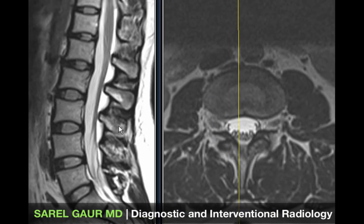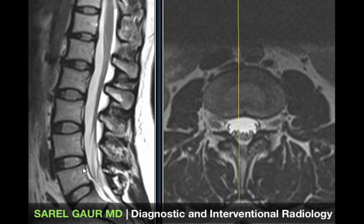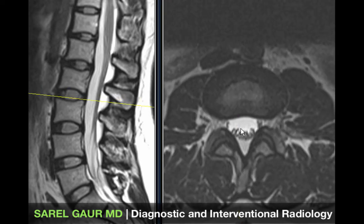Before finishing, let's quickly go over the ligamentous structures of the lumbar spine. On the sagittal plane anteriorly we have the ALL, or anterior longitudinal ligament. Posteriorly we have the PLL, the posterior longitudinal ligament. Lining all the lamina we have the ligamentum flavum, seen very nicely on the axial plane as a low signal structure running along the lamina.